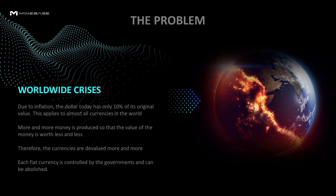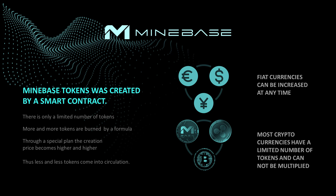The Minebase token was created by a smart contract. There is only a limited number of tokens. More and more tokens are burned by a formula. Through a special plan, the creation price becomes higher and higher, so less and less tokens come into circulation.